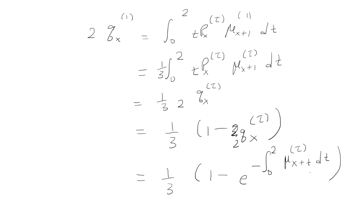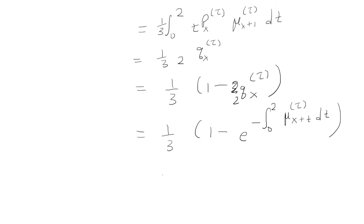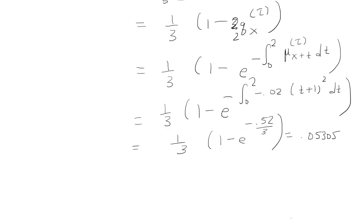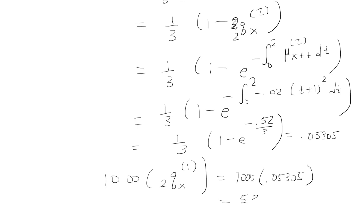Substituting the total force of mortality, which is 0.02 times (t+1) squared, and solving the integral, we end up with one-third times the quantity 1 minus e to the negative (0.52/3). That simplifies to 0.05305. Finally, 1,000 times the probability of dying due to the first decrement is 1,000 times 0.05305, giving a final answer of 53.05.